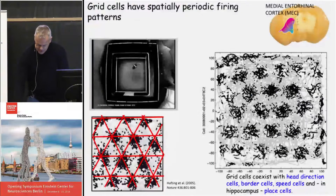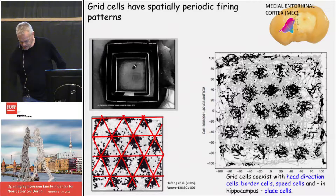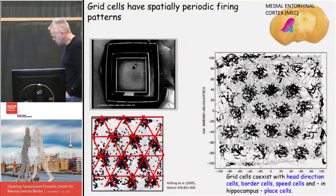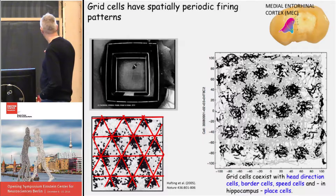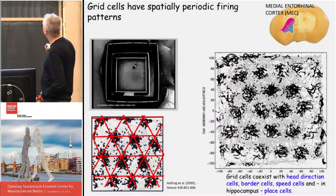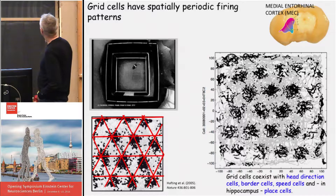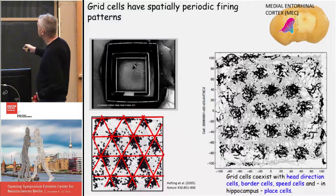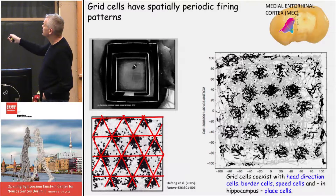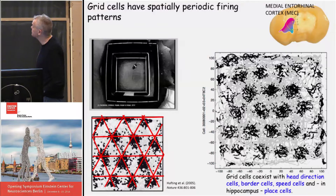Let me just refresh your memories on grid cells. They look like this - a cell that fires in particular locations. This is the trace of a rat that has been walking for 30 minutes in a large box. Each dot is the location of one spike, and you can see how they form a hexagonal pattern, which is visible with the red lines overlaid.